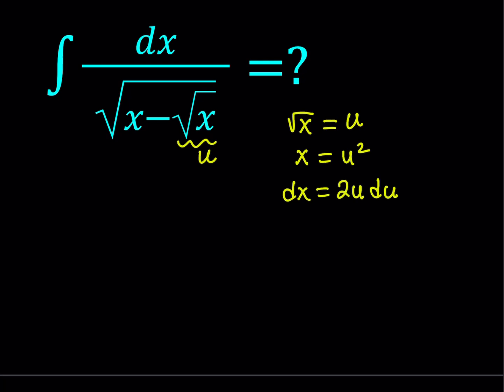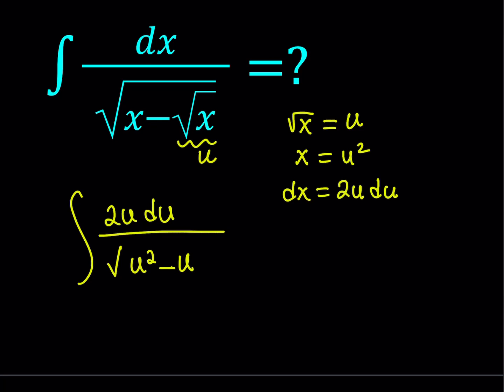I'm going to go ahead and replace everything. I have everything I need here. The x is going to be replaced with 2u du, then inside the radical x will be replaced with u squared, and square root of x is going to be u. So we get this type of integral. What I'm going to do is manipulate this integral in an interesting way — I'm going to be following an algebraic manipulation method.